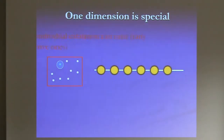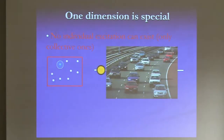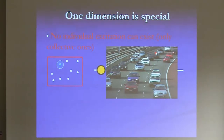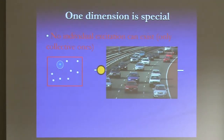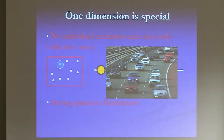If you queue in a line, you know very well that individual excitations do not exist. You cannot move if the person in front of you or behind you is not moving — same with cars in a lane: the car cannot move as an individual, the whole lane moves. So in 1D, there is a collectivization of excitations which makes the nature of these systems very different from 2D or 3D.